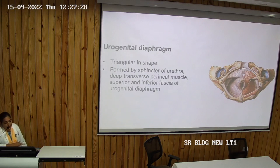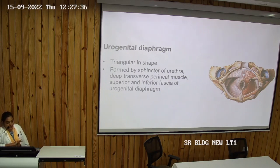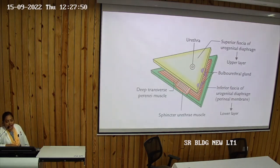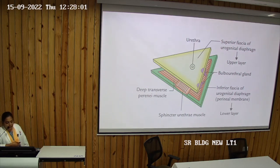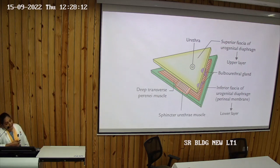The urogenital diaphragm is a triangular structure formed by two muscles — the sphincter urethrae (voluntary) and the deep transverse perineal muscle — bounded superiorly by the superior endopelvic fascia and inferiorly by the perineal membrane. Below the superior fascia of the urogenital diaphragm — the endopelvic layer — are the two muscles, and below them is the inferior fascia shown as the perineal membrane, which is triangular with its apex attached anteriorly towards the pubic symphysis. The deep perineal space also contains the bulbourethral gland.